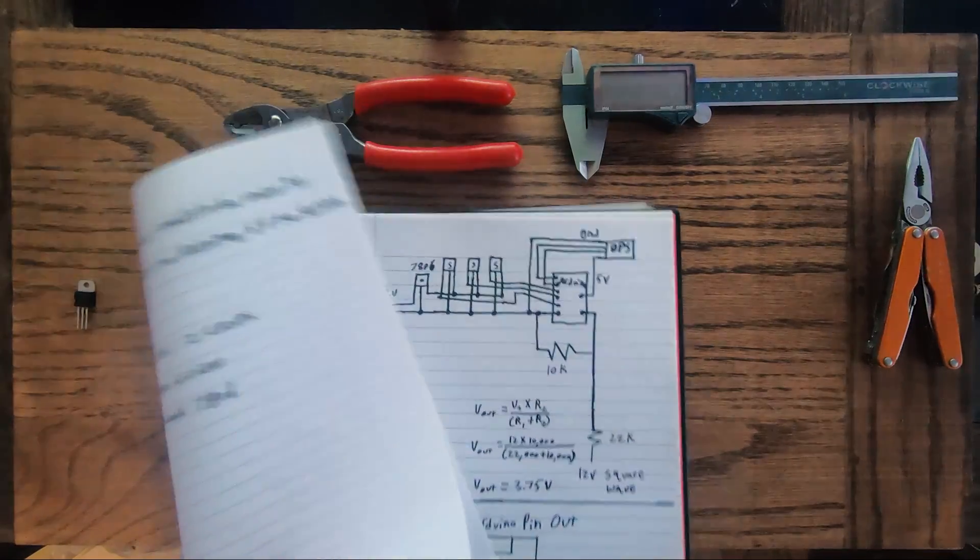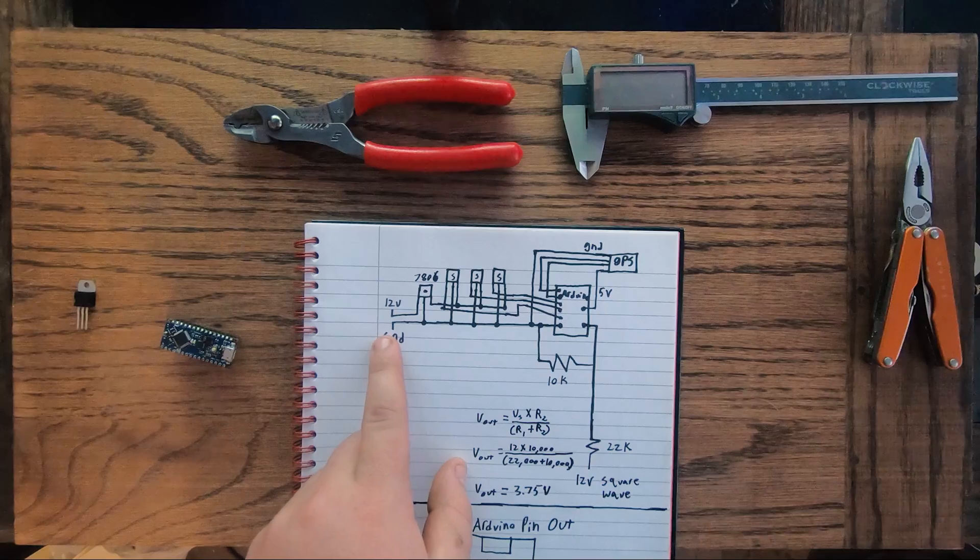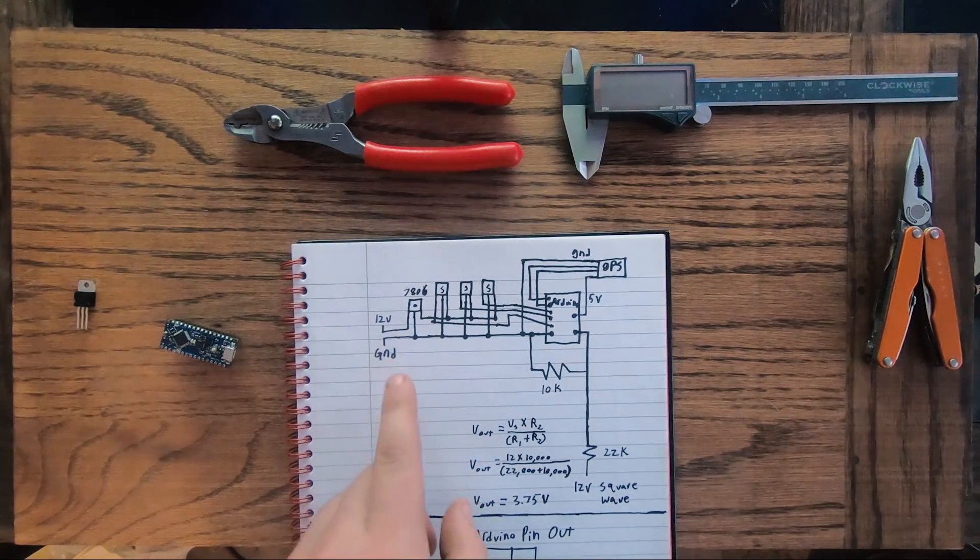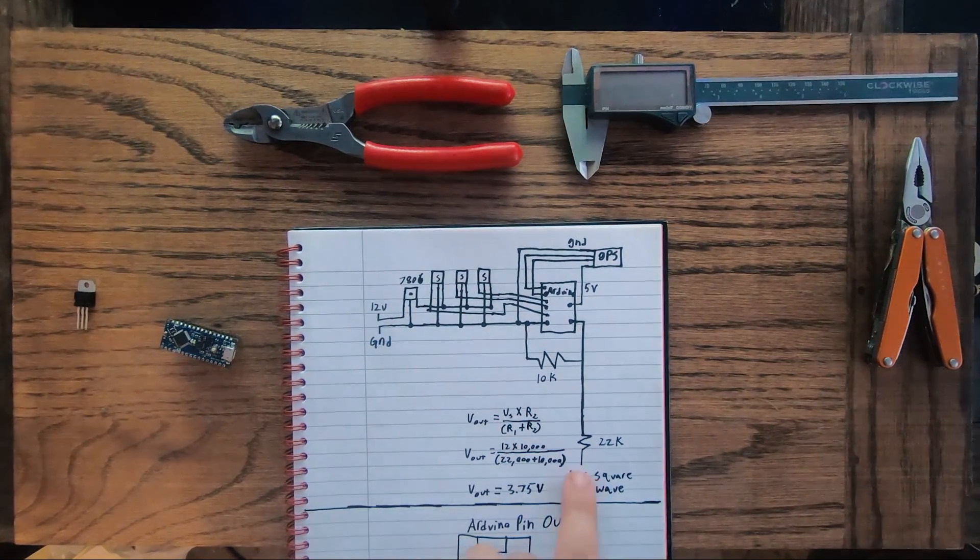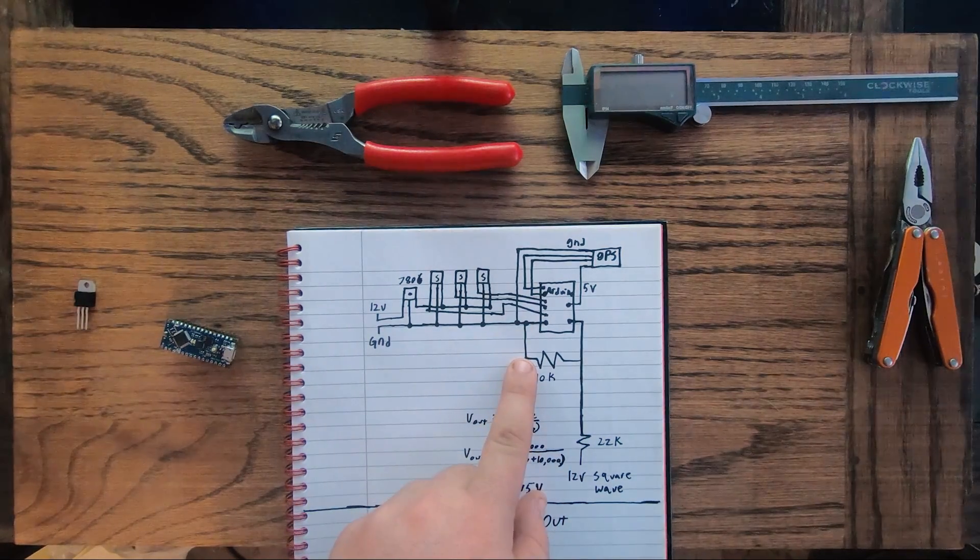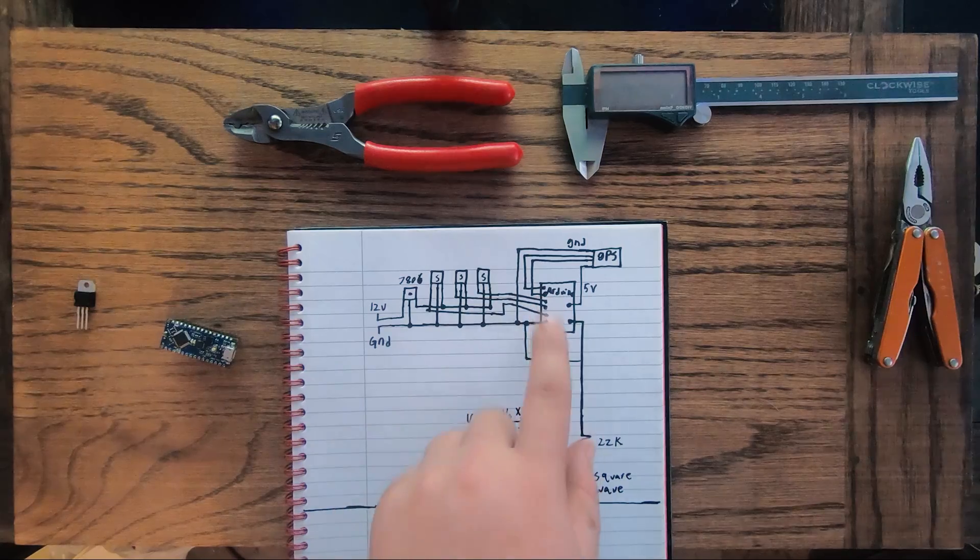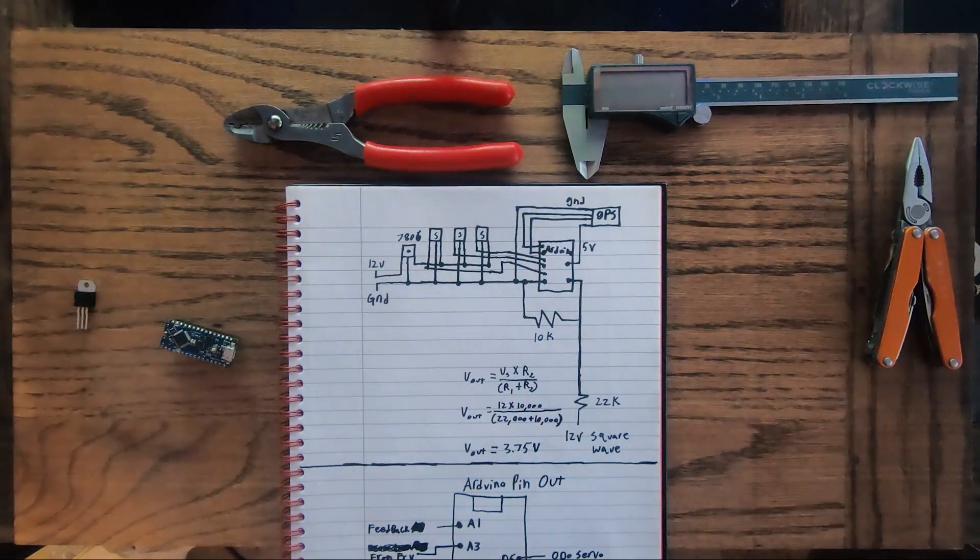So if we look at our wiring diagram here, essentially I have our 12 volt coming in, our ground signal coming in, and then a square wave coming in with my voltage divider and the 7806 powering the servos, three servos running through the Arduino on these pins.